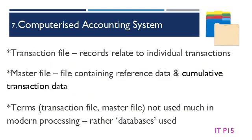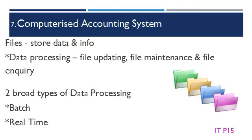In older systems, files were usually classified as transaction files and master files. Transaction files contain records relating to individual transactions. Master files are files containing reference data and cumulative transaction data. These terms — transaction files and master files — are not used much in modern processing; the preferred term of databases is used. Files are used to store data and information. The main types of data processing involving files are file updating, file maintenance, and file inquiry.